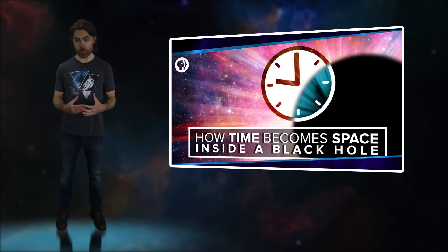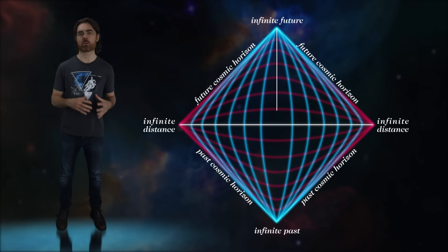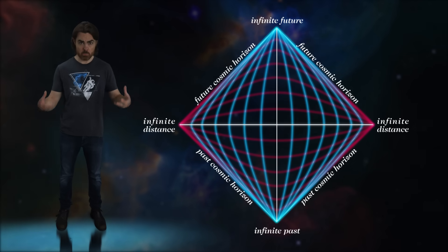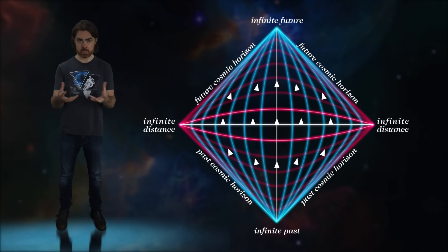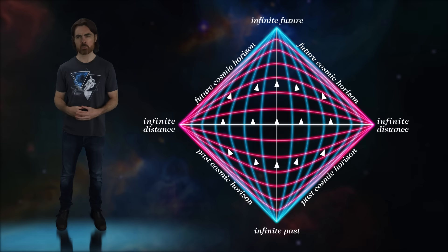To really understand what this eternal black hole looks like, we're going to need to use a tool that we've already played with, the Penrose diagram. To refresh your memory, in a Penrose diagram, the x and y axes are redefined from space and time to merge space and time into new coordinates.